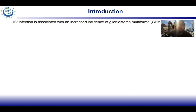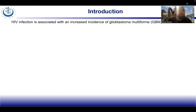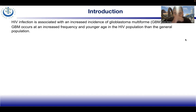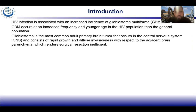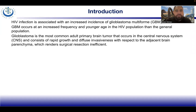Starting with the introduction: HIV-1 infection is associated with an increased incidence of glioblastoma multiforme, or GBM. GBM occurs at an increased frequency and younger age in the HIV population than the general population. GBM is the most common adult brain tumor occurring in the central nervous system, and it consists of rapid growth and diffuse invasiveness with respect to adjacent brain parenchyma, which renders surgical resection inefficient.